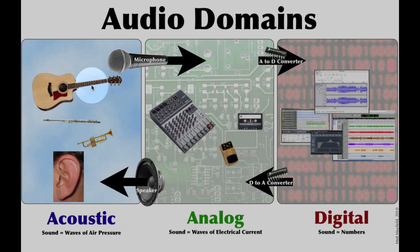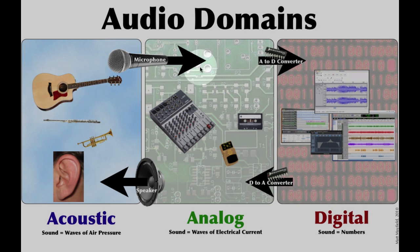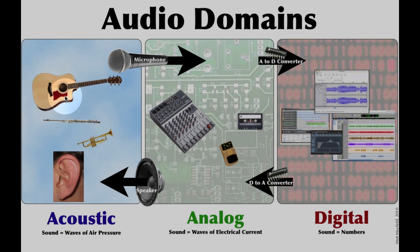Let's start by going from the acoustic world all the way to the digital world and then back again. Let's say you were recording a guitar. A microphone translates sound from the acoustic world into the analog world, where the sound is now represented by waves of electrical current in roughly the same shape that they took in the acoustic world as waves of air pressure.